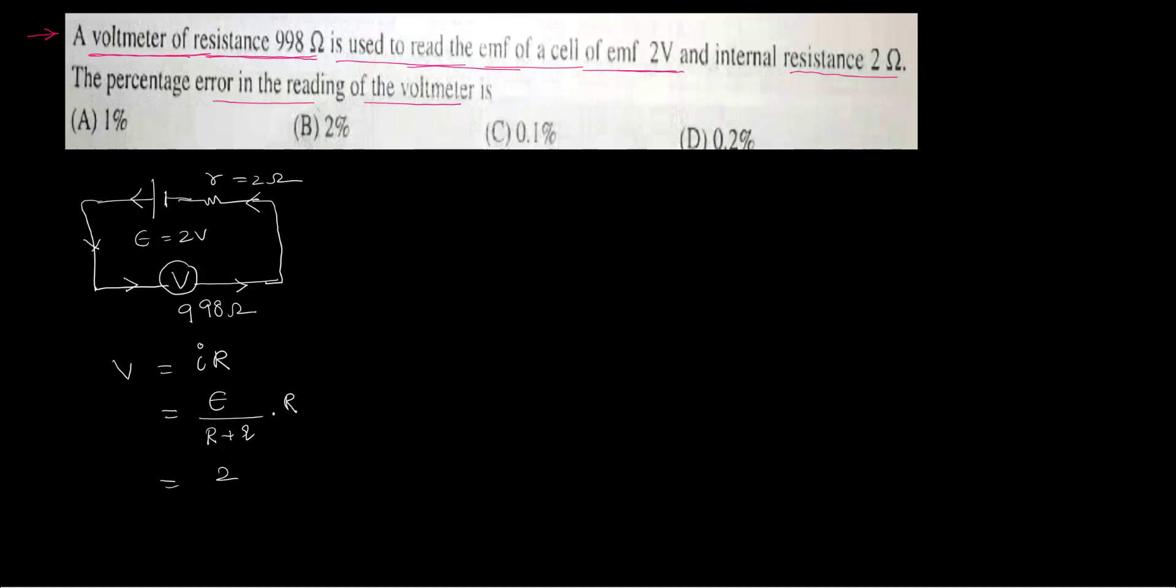EMF is 2 volts. Resistance of voltmeter is 998. Resistance internal is 2 ohms for the battery. External resistance is the resistance of the voltmeter, 998. So if you simplify this, it will be something like 2 by 1000.